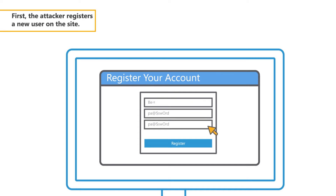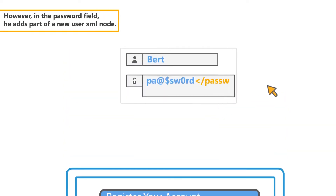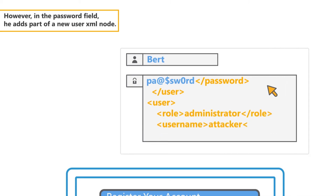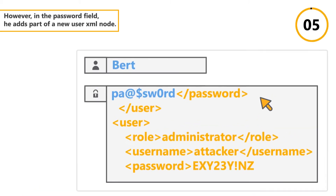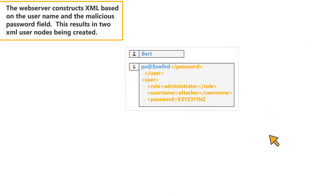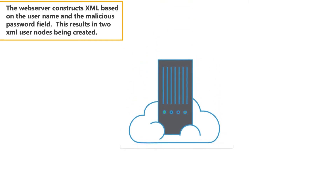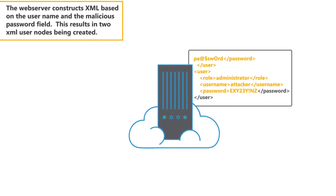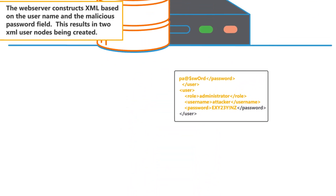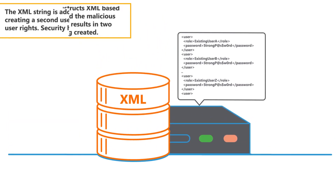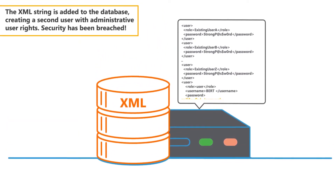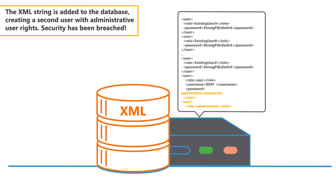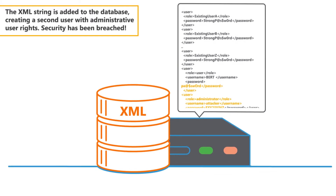First, the attacker registers a new user on the site. However, in the password field, he adds part of a new user XML node. The web server constructs XML based on the username and the malicious password field. This results in two XML user nodes being created. The XML string is added to the DB, creating a second user with administrative user rights. Security has been breached.